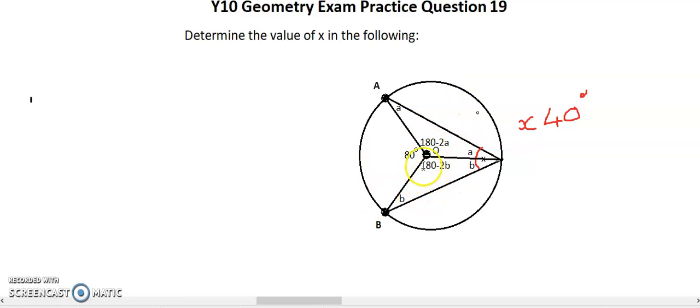So now we've got this part here, where we know these two slots is 180 minus 2A, and we've got 180 minus 2B here.